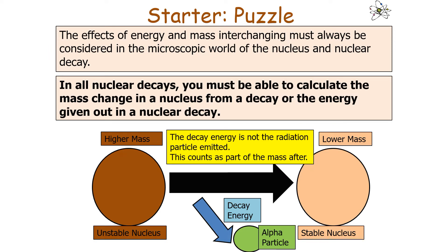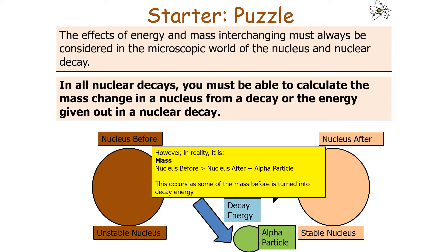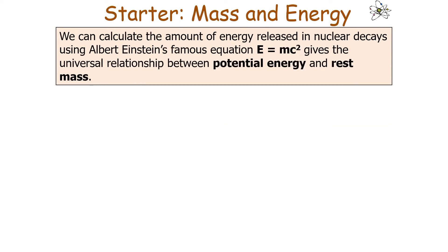It's important to note that the decay energy is not the radiation particle emitted — that counts as mass afterwards. If there was only mass, the nucleus before would equal the nucleus after plus the alpha particle. However, in reality the mass before is greater than the nucleus after plus the alpha particle, because some mass has turned into decay energy. The true equation states that the mass-energy of the nucleus before equals the mass of the nucleus afterwards plus the mass of the alpha particle plus the decay energy. This mass change is called the mass defect.